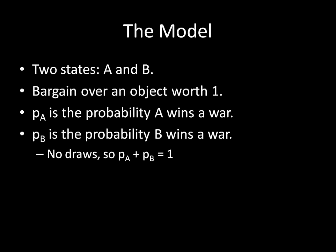Now, if the states were to fight a war, PA is going to represent the probability that A wins, and PB represents the probability that B wins. By assumption, we assume that there are no draws, so the probability that A wins plus the probability that B wins sums to 1. We can relax this assumption and still get the same result, but it will make the algebra a lot more messy. So it's either A wins or B wins — no draws.